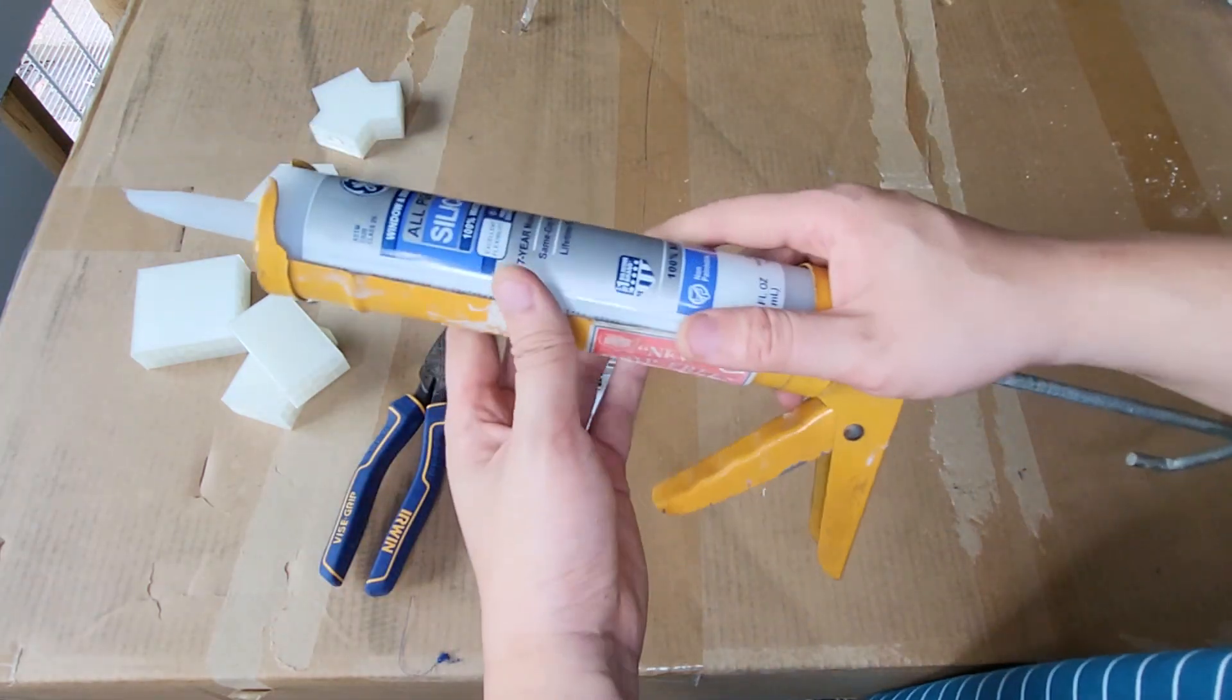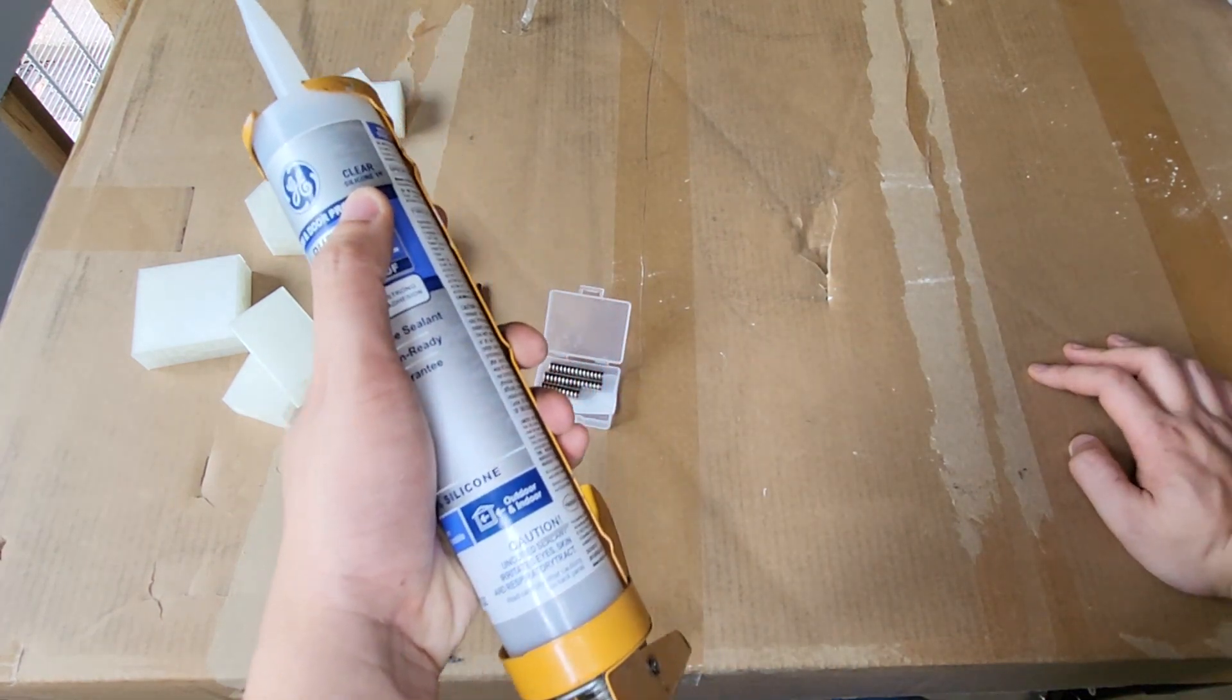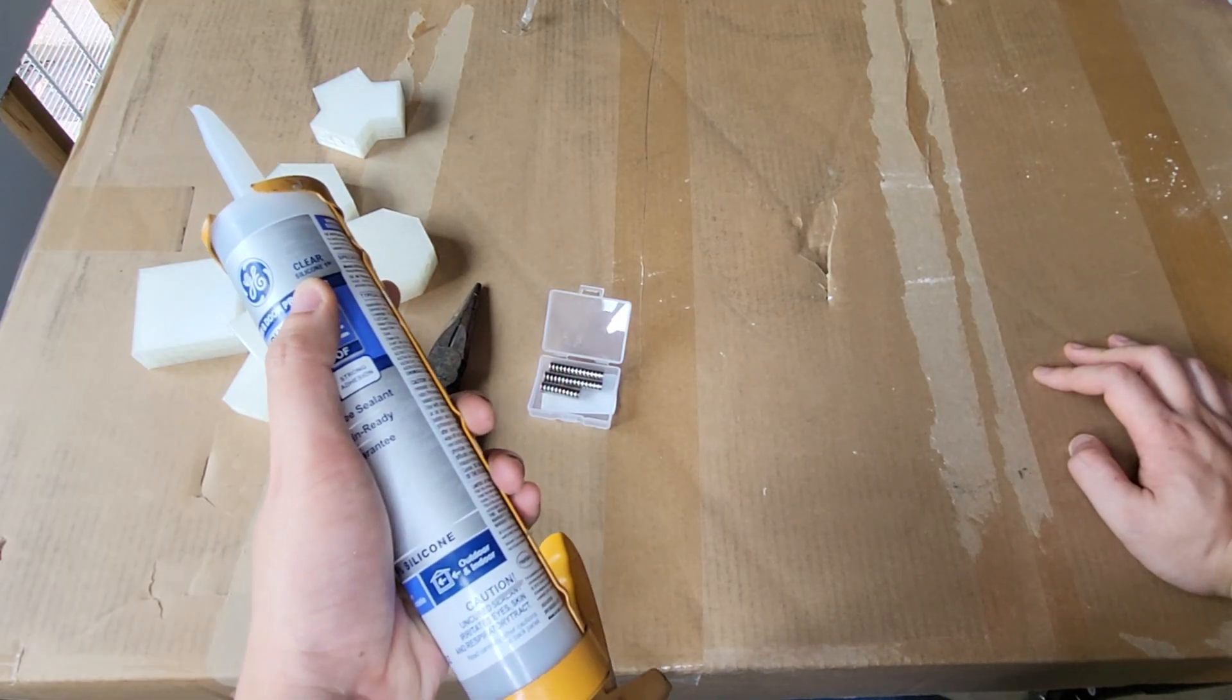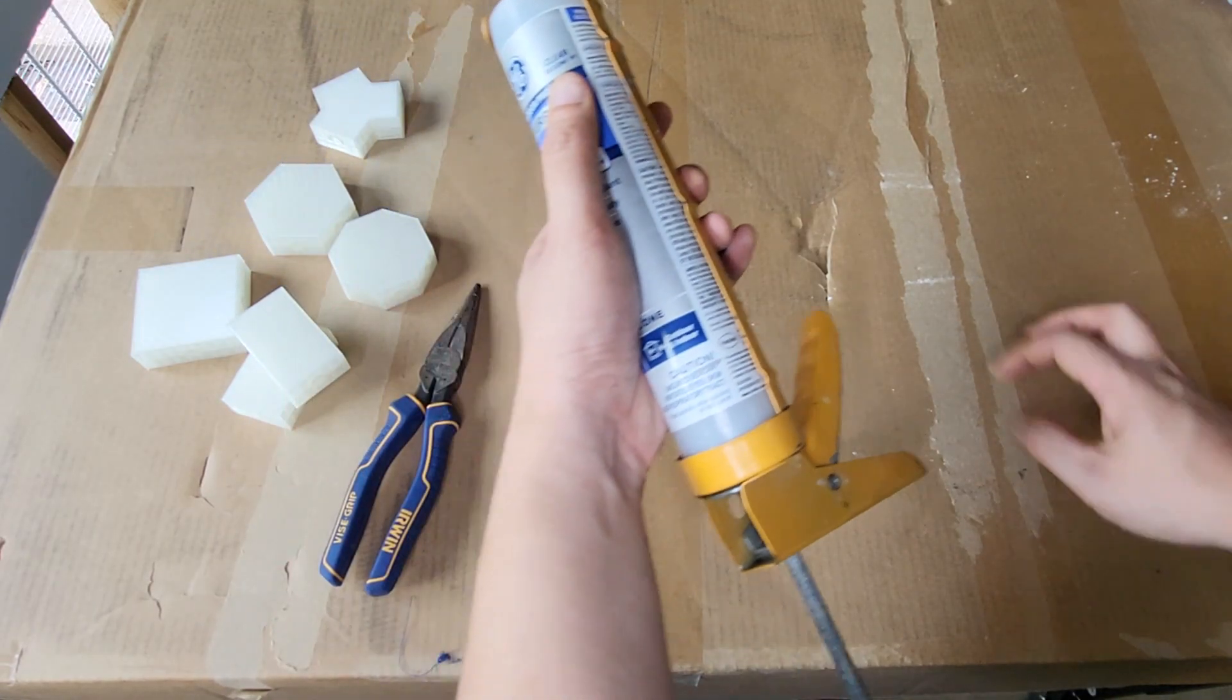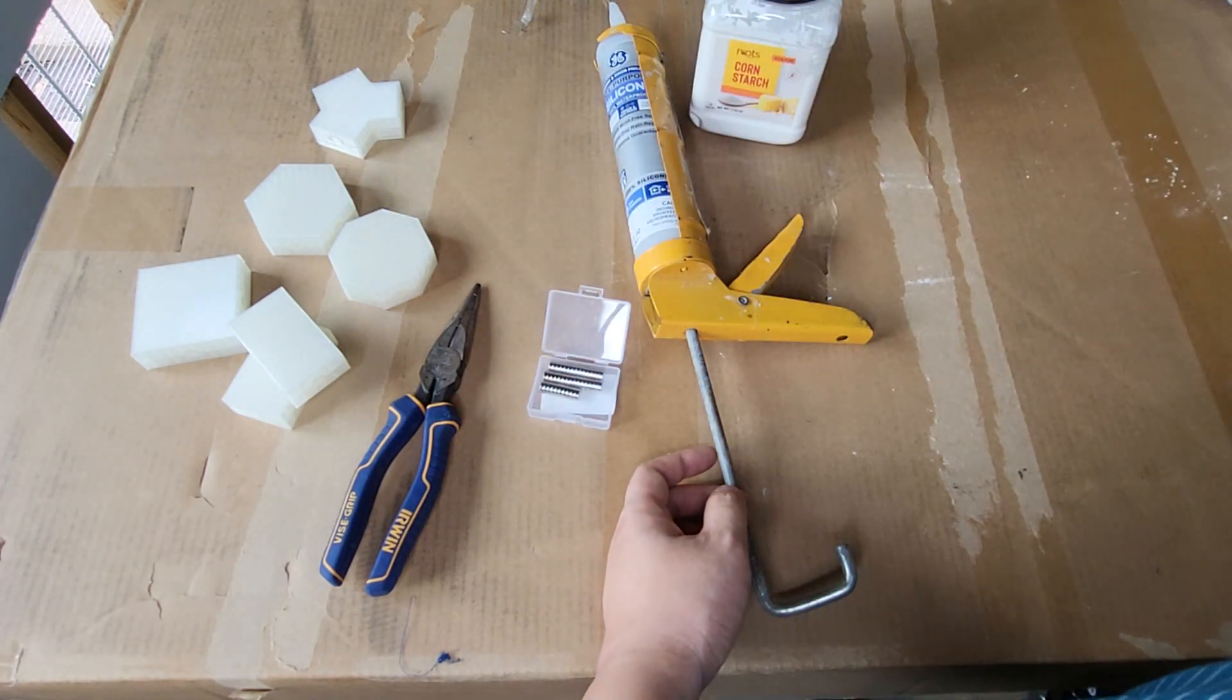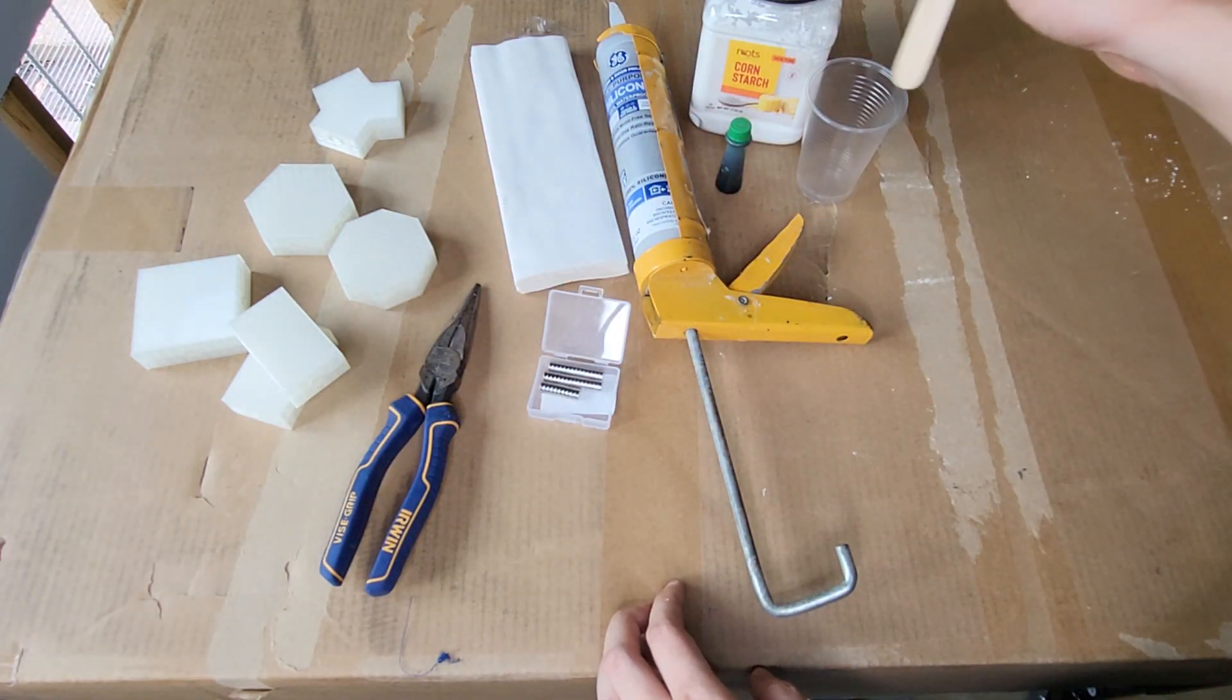Silicone gun with silicone. This is gonna be the clear number one. We're gonna make something that's depending on who you go by, either called Proto Putty or Oogoo. To make it, you need the clear number one silicone, corn starch.